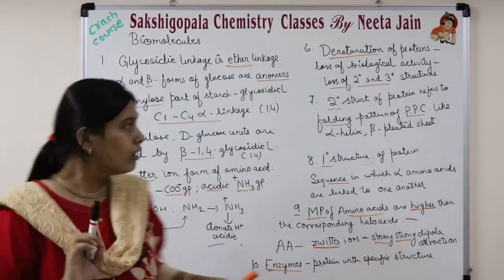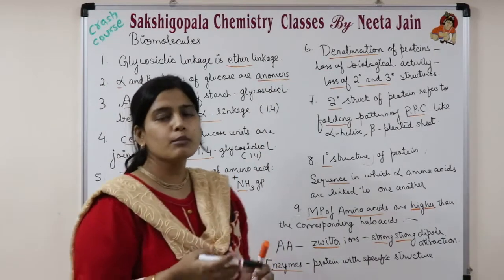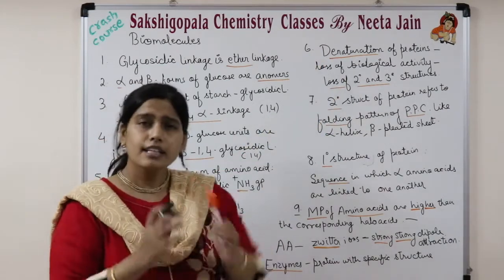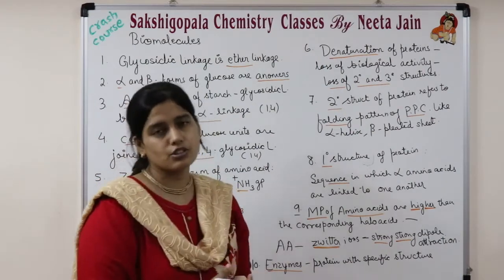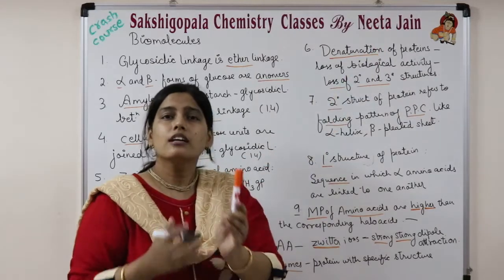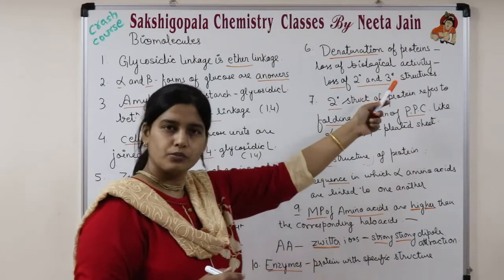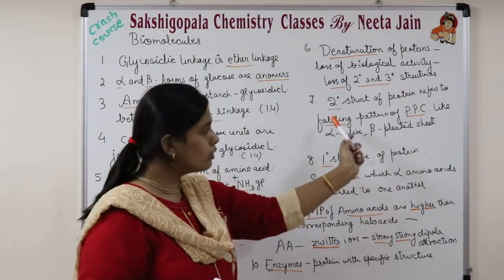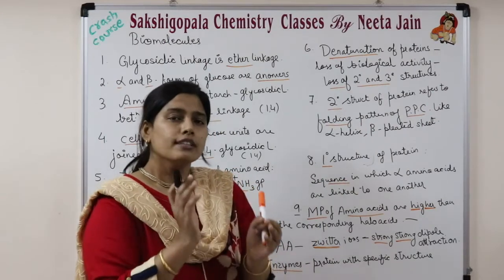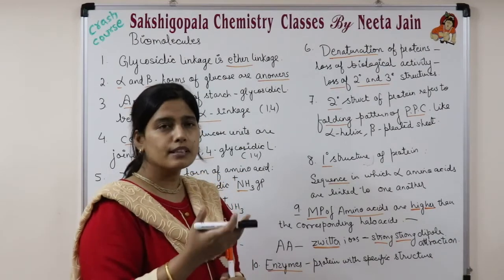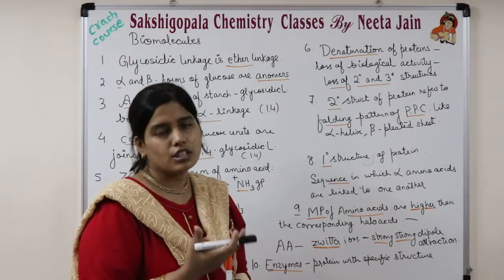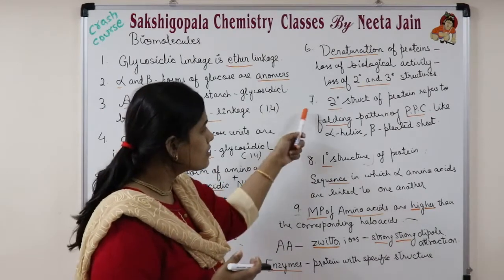Coming to the denaturation of protein: denaturation of protein means the protein loses its biological activity. That is called denaturation. Denaturation of protein is related to the secondary and tertiary structure. The secondary structure of protein refers to the folding pattern of the polypeptide chain — for example, alpha helix and beta pleated sheet. The secondary structure describes what angle the polypeptide chain is folded at, giving rise to alpha helix or beta pleated chain structures.